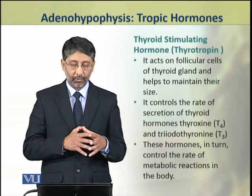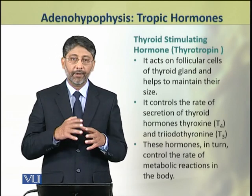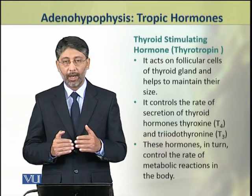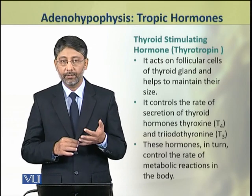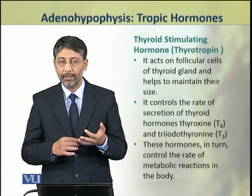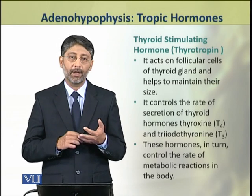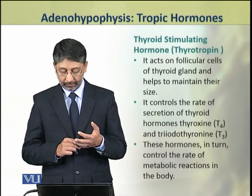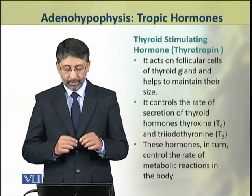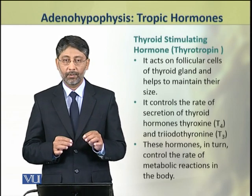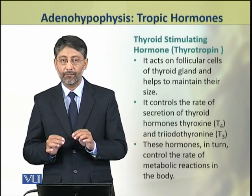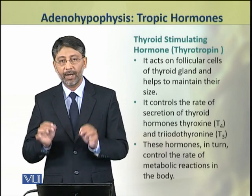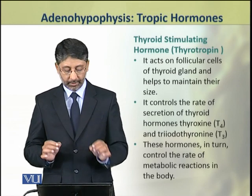TSH also controls the rate of secretion of thyroid hormones — thyroxine, called T4, and triiodothyronine, called T3. These hormones T3 and T4 in turn control the rate of metabolic reactions in the body.